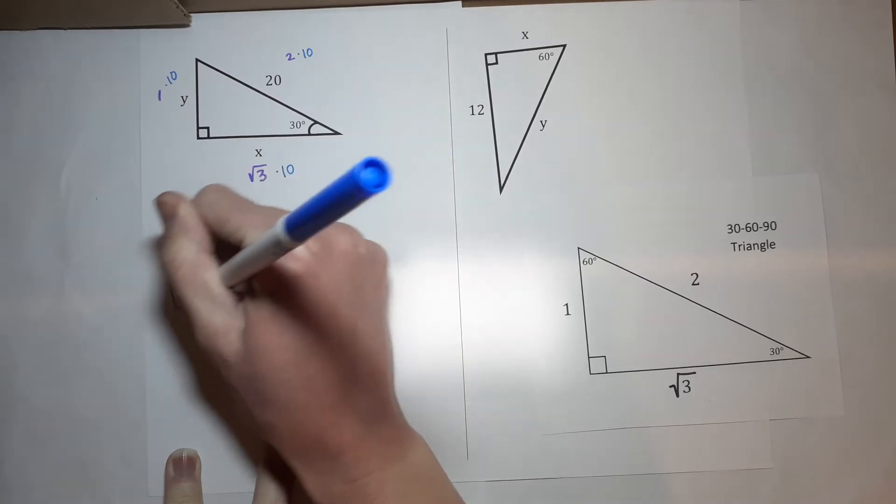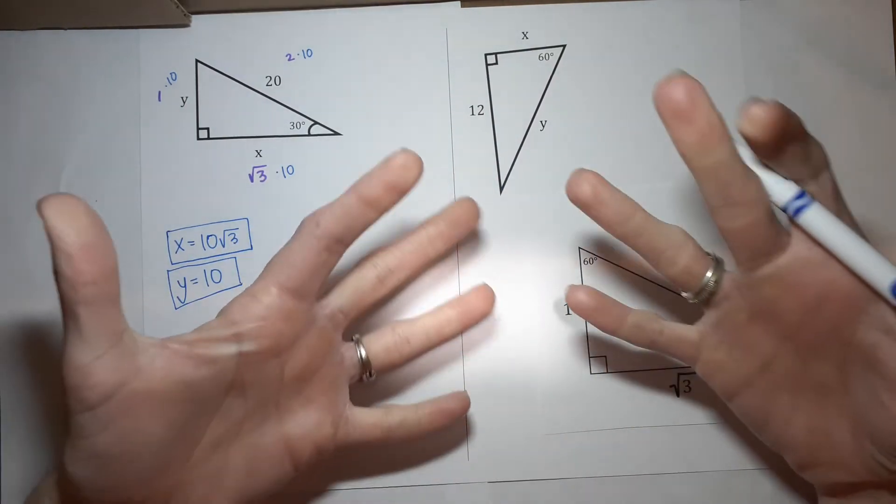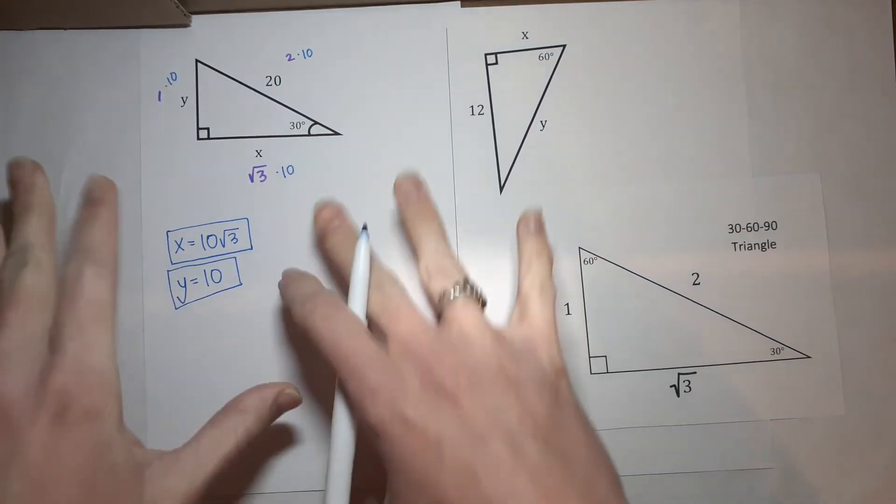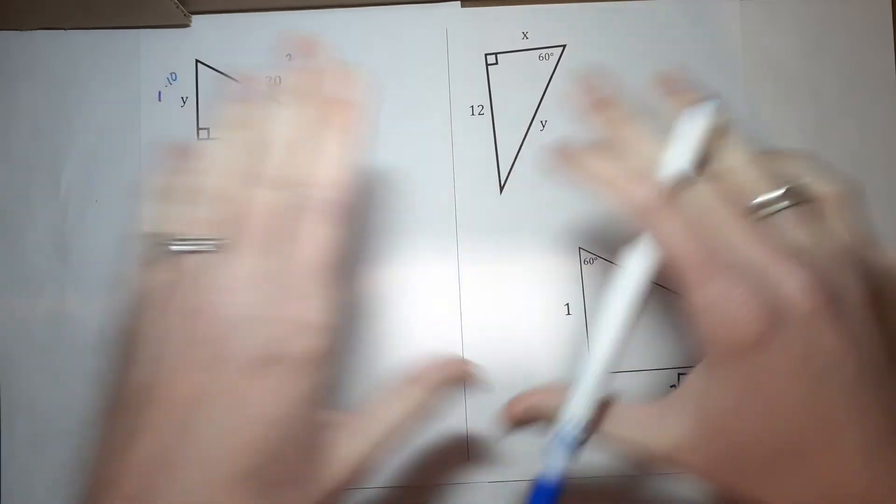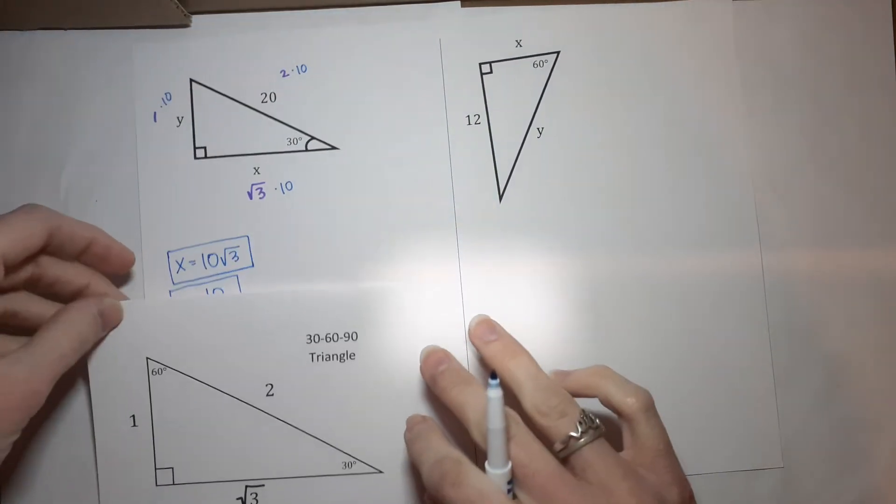Now, that one was pretty awesome because it was 10, but you can imagine the possibilities. It could be a fraction. It could be pretty much anything. So, sometimes it's pretty easy to tell, but this one, it may not be so easy to tell. So, we will take a look at this one as well.